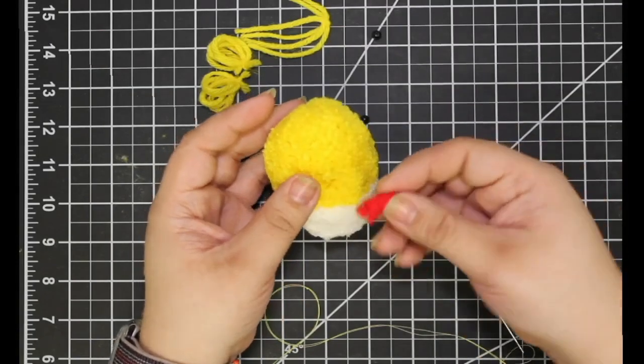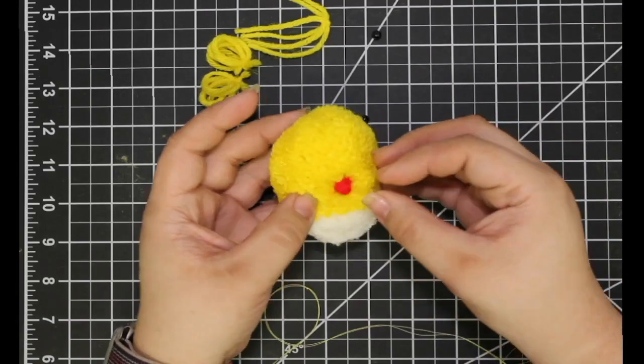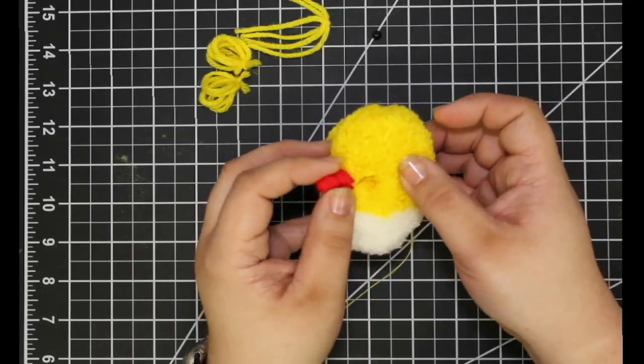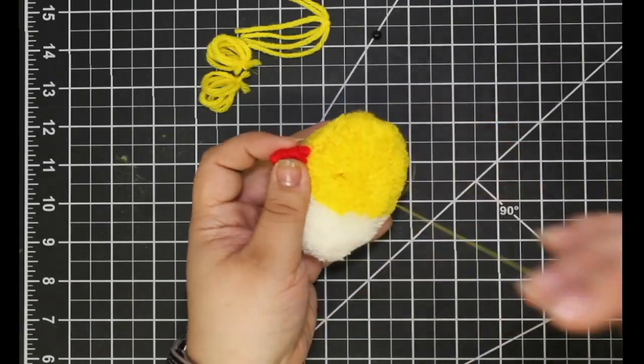Start by making a divot in the middle to place the beak. Using your threaded needle, start from the back of the chick and push the needle through the middle until it appears around the front of the beak.